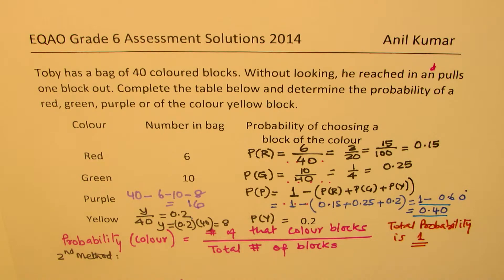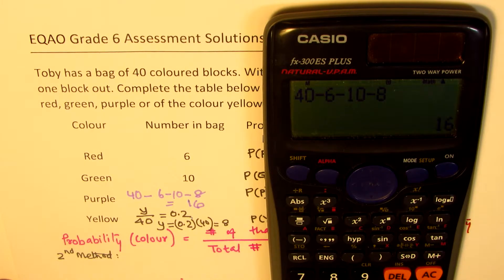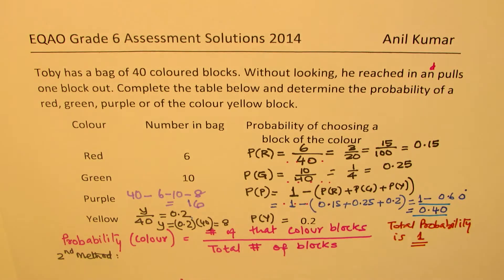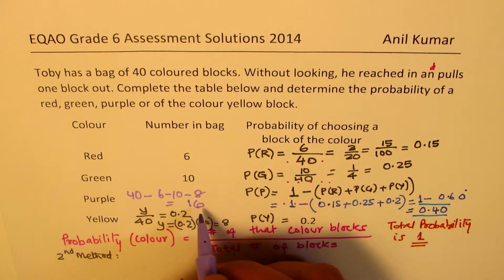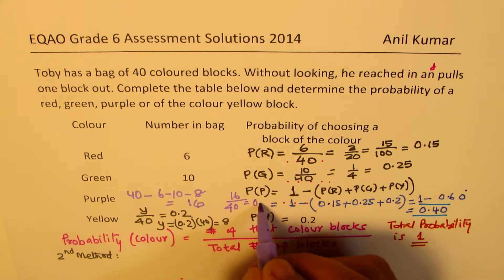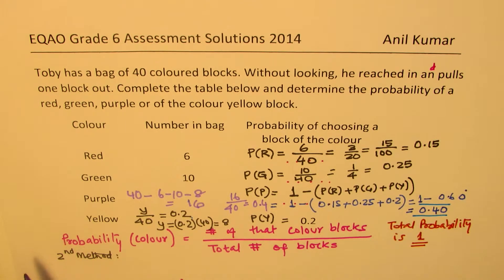You could use the calculator: 40 minus 6 minus 10 minus 8 equals 16. Then divide 16 by 40 to get your answer in decimals, which gives 0.4 — exactly the same answer. So 16 over 40 equals 0.4, and that is our second method of solving this question.